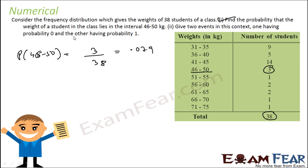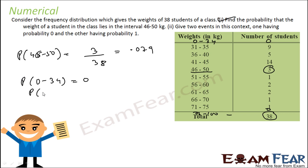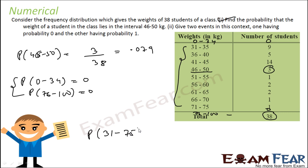The question also asks for an event with probability 0 and an event with probability 1. If you look at the range 0 to 34, the number of students is 0. Similarly, 76 to 100 has 0 students. So the probability of a student being in the range 0 to 34, or 76 to 200, is 0. On the other hand, if you merge all ranges from 31 to 75, all students fall in this range. So the probability of a student's weight being in the range 31 to 75 is 1.